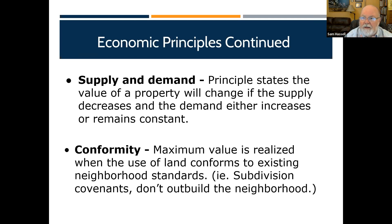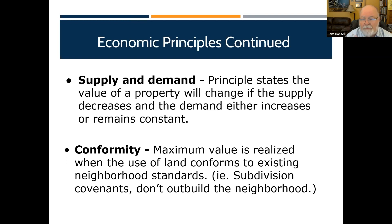If you're in a community of custom homes, everything being different is part of the appeal. But in a development built by five or six different builders, conformity gets blurry and pricing gets confusing. Take Clear Pond neighborhood as an example — every section was built by a different builder, each with a different reputation and different house quality, so they all have different values and there's no conformity.